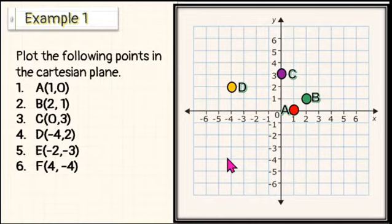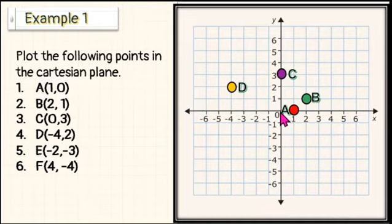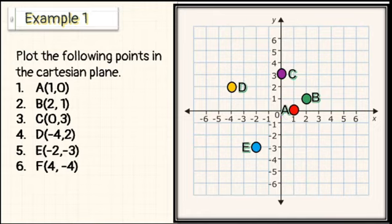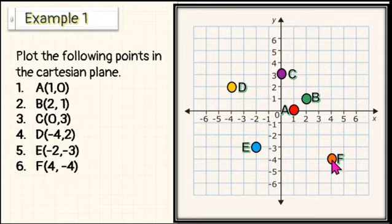Number 5: E (negative 2, negative 3). Both coordinates are negative, so point E is in quadrant 3. From the origin, count 2 units to the left and 3 units down. The location of point E is here. And for last, F (4, negative 4). Since the x-coordinate is positive and the y-coordinate is negative, point F is in quadrant 4. From the origin, count 4 units to the right and then 4 units below. Here is the location of point F.